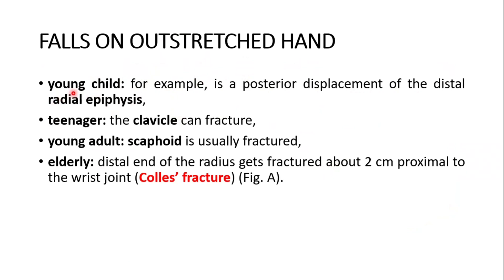To reiterate the age-wise distribution: in a younger child, a fall on the outstretched hand leads to posterior displacement of the distal radial epiphysis. In a teenager, the clavicle can fracture. In a young adult, the scaphoid is usually fractured. In the elderly, the distal end of the radius gets fractured about 2 cm proximal to the wrist — this is the Colles' fracture, the topic under discussion today.